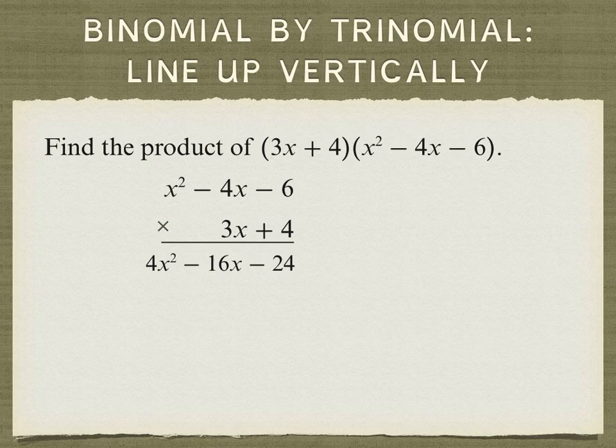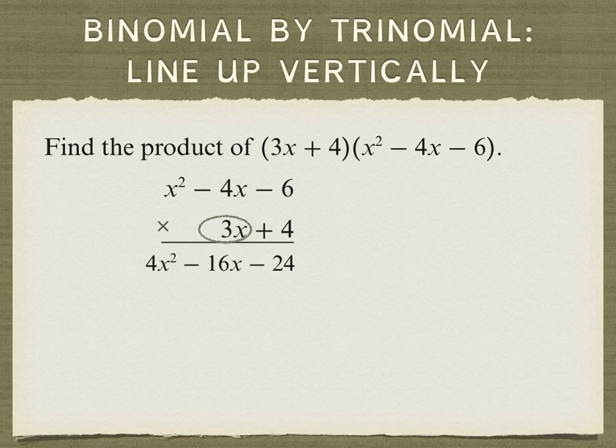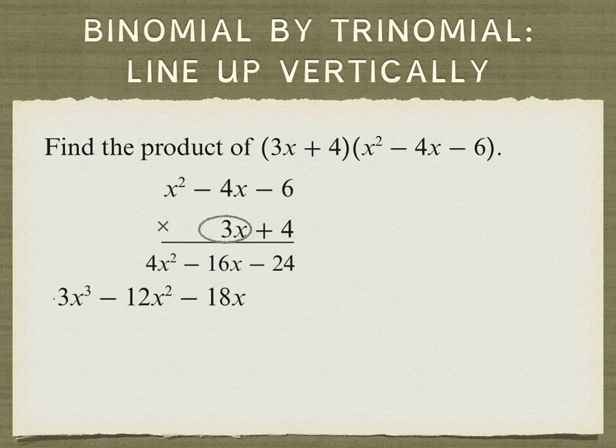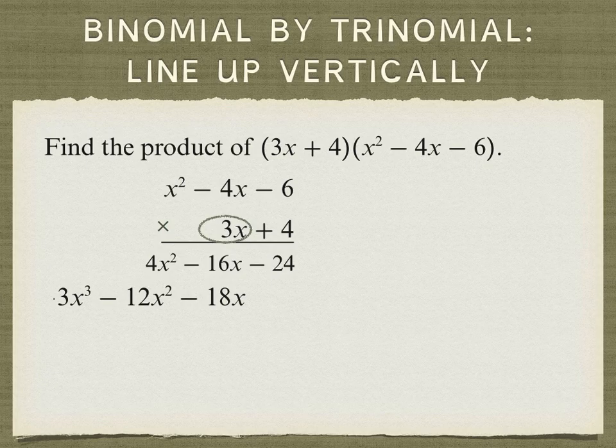And now we can take the 3x and multiply it by the three terms above it. And we're going to remember to line up like terms. 3x times negative 6 is negative 18x, and then 3x times negative 4x is negative 12x squared. 3x times x squared is 3x cubed.